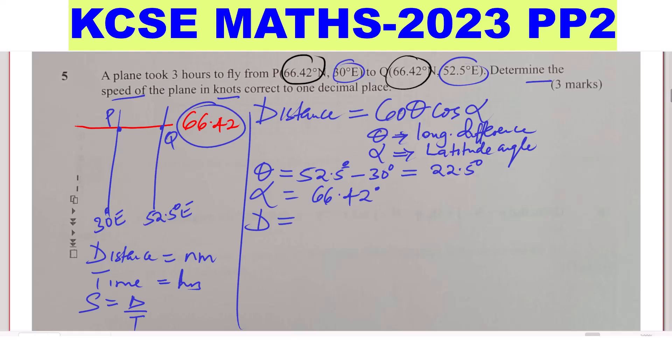Distance is given by 60 multiply by theta, which is 22.5 times the cosine of the latitude angle, which is 66.42. Just use a calculator to do this. This will give 540.04 nautical miles.